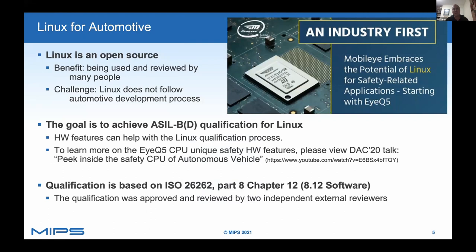One of the benefits of Linux is that it's open source, so it's been used and reviewed by many people, which makes it easier in some sense to consider it as a safe system. However, on the other hand, the Linux development flow was developed before there were guidelines for the automotive industry, and it's not easy to change or adapt it to an automotive flow. What we are trying to show today is how to close those gaps and achieve qualification based on ISO 26262 for ASIL B for Linux.